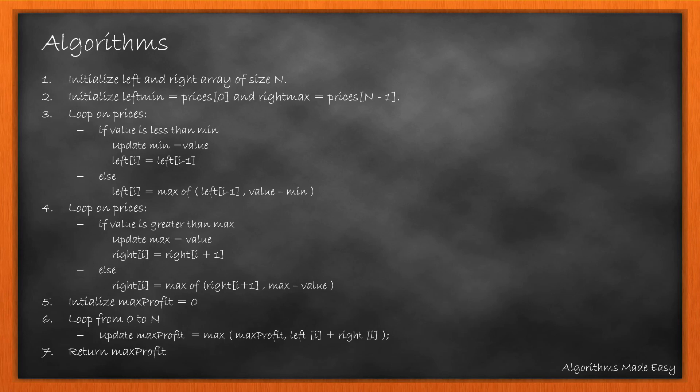Summarizing the steps: we will initialize two arrays left and right and left min and right max. We fill the left and right array by iterating over the prices. At the end we find the max profit by finding the maximum sum of left and right array.